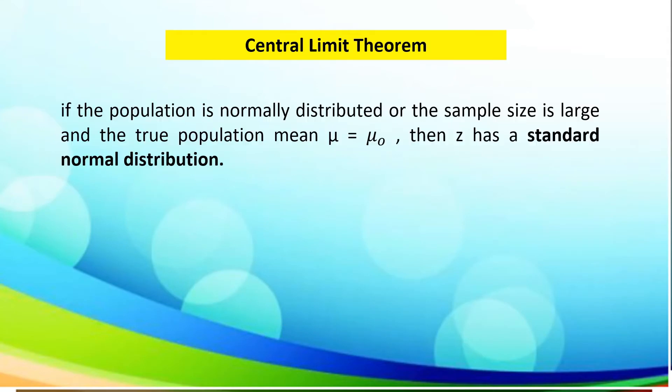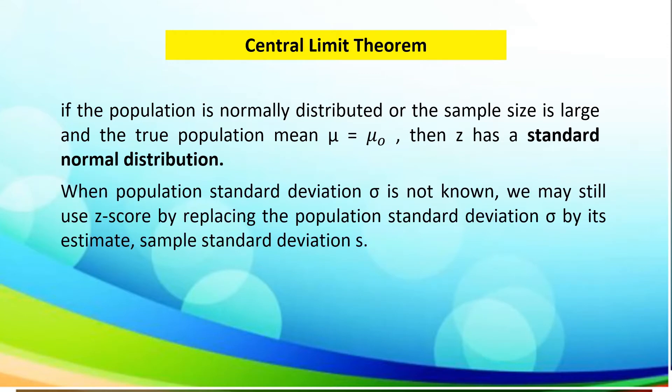In the central limit theorem, if the population is normally distributed or the sample size is large and the true population mean is equal to the sample population, then z has a standard normal distribution. When the population standard deviation is not known, we may still use the z-score by replacing the population standard deviation by its estimate or sample standard deviation.